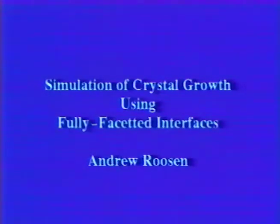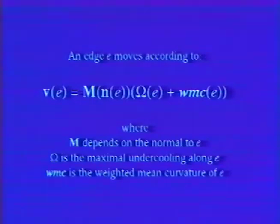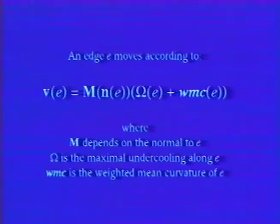The following images were computed by a program which moves a polygonal interface in a diffusion field. By making the assumption that the wolf shape is a polygon, we can simplify the problem of directly moving the interface. At every time step, each edge moves according to the displayed formula.